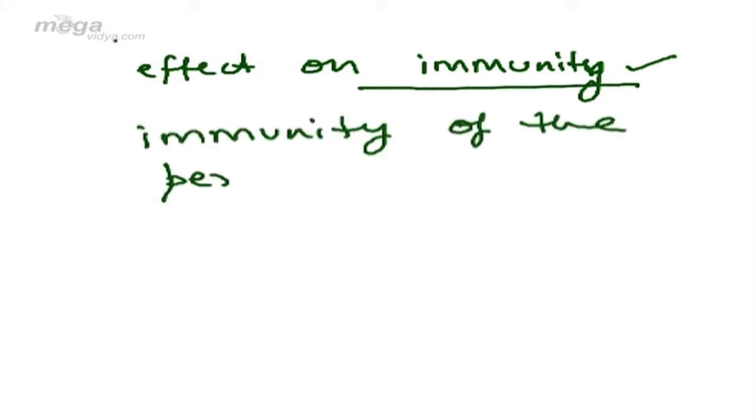Dear students, can you tell me if the number of WBCs decreases in a person, what will be the effect on immune system? Obviously, as the number decreases, immunity also decreases and the person suffers from multiple infections.